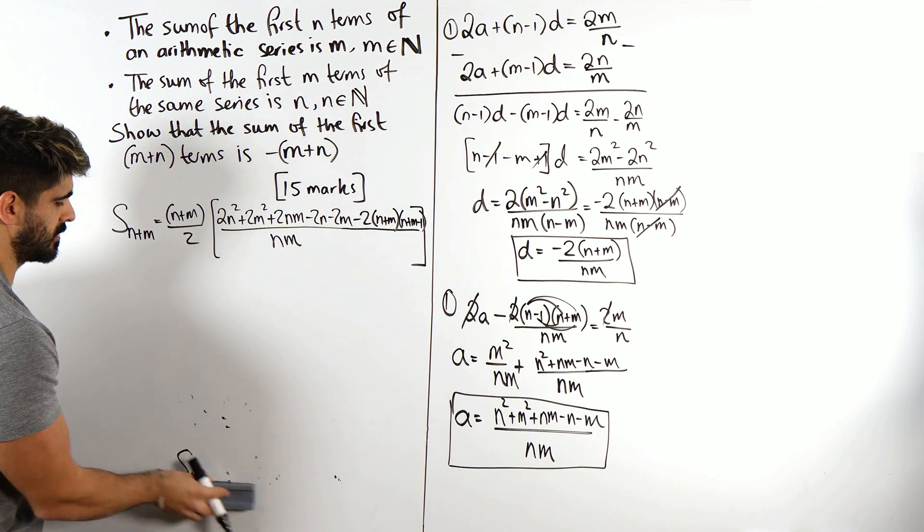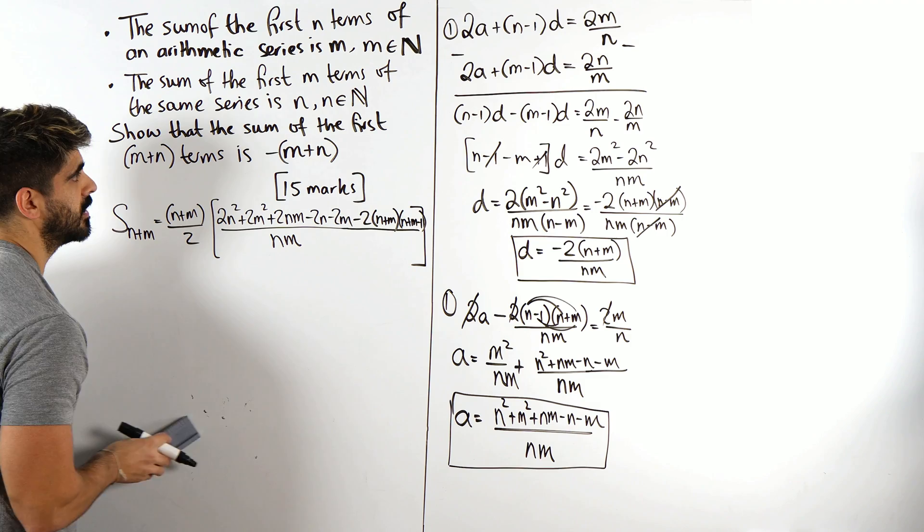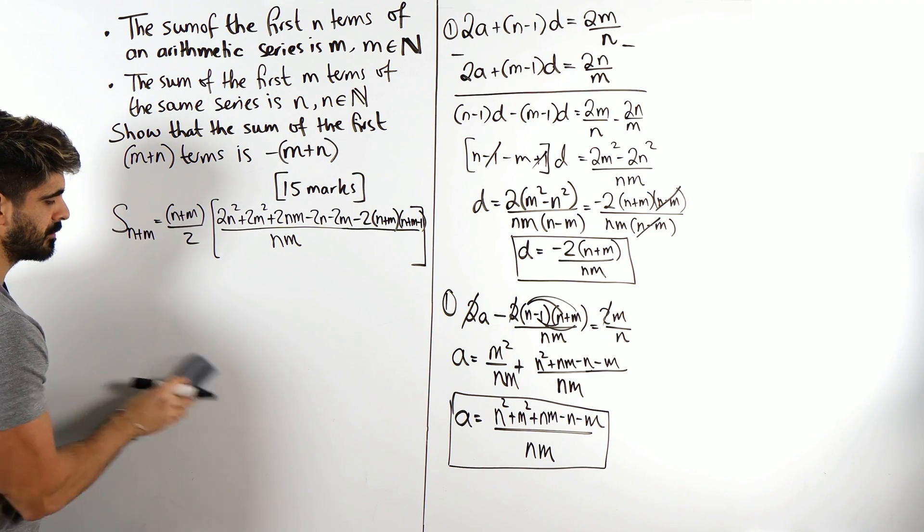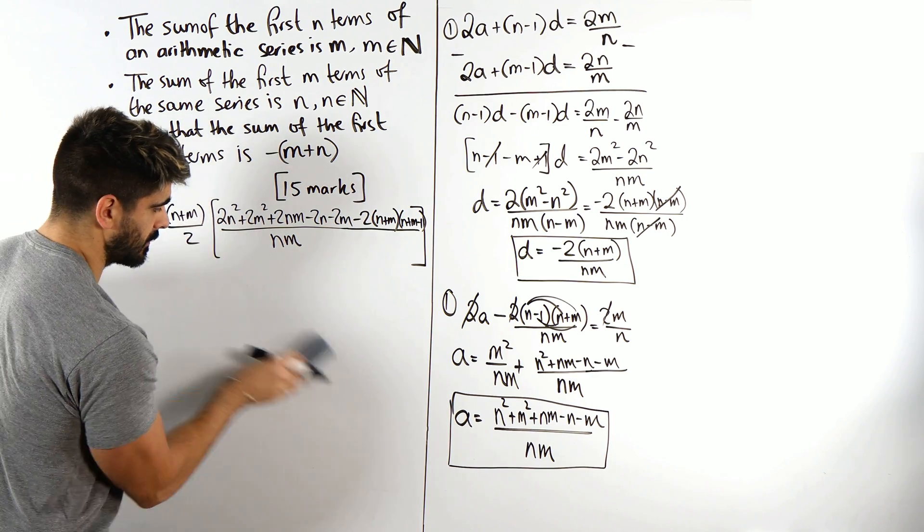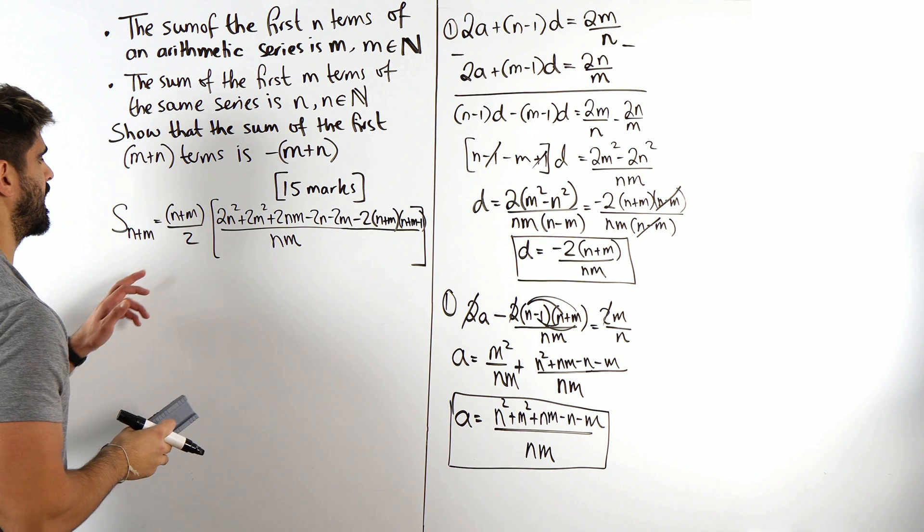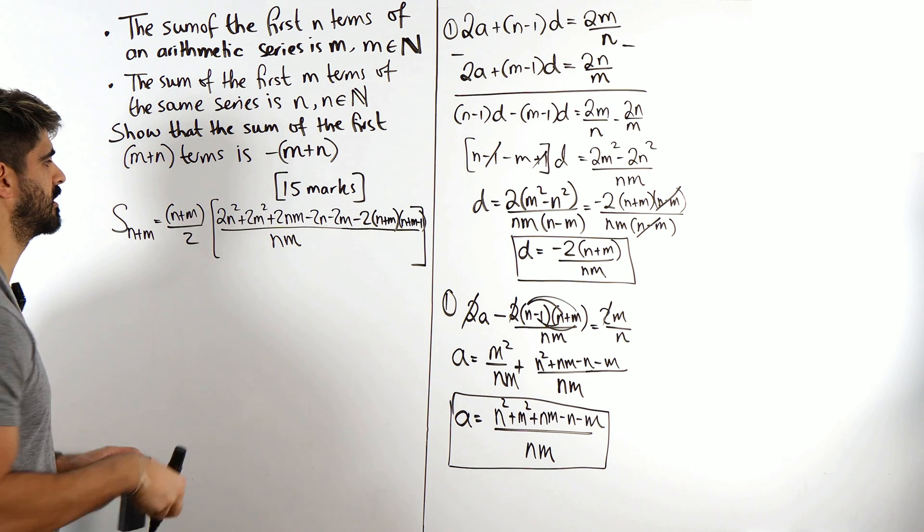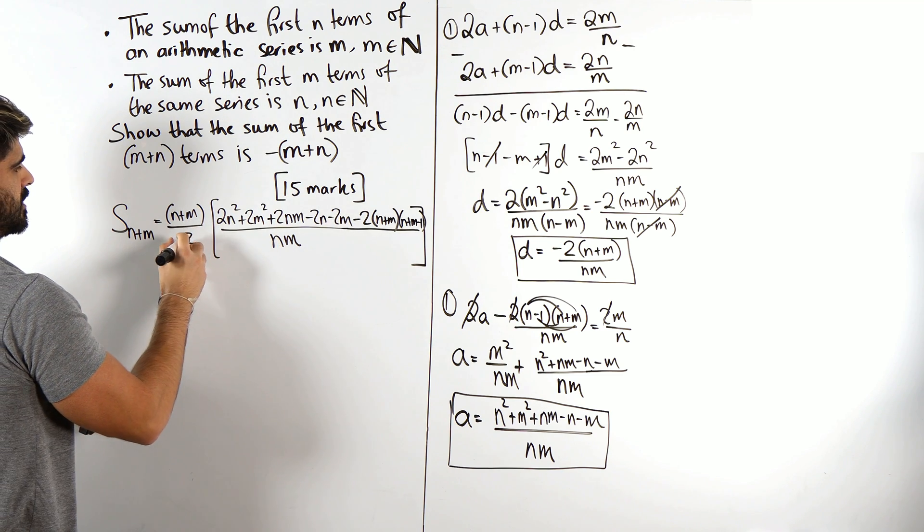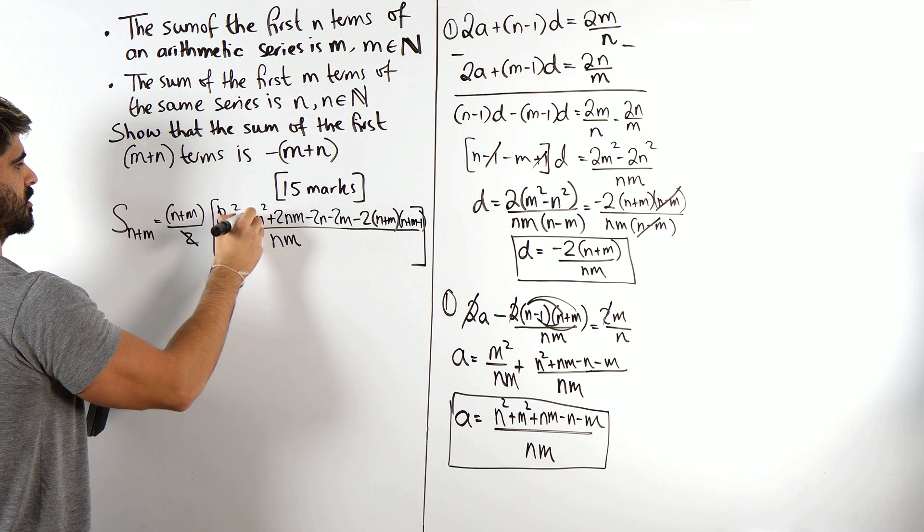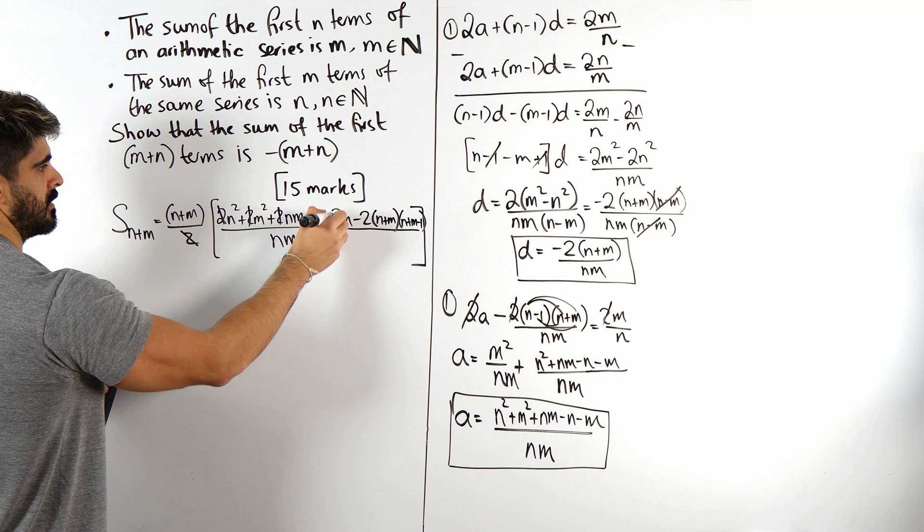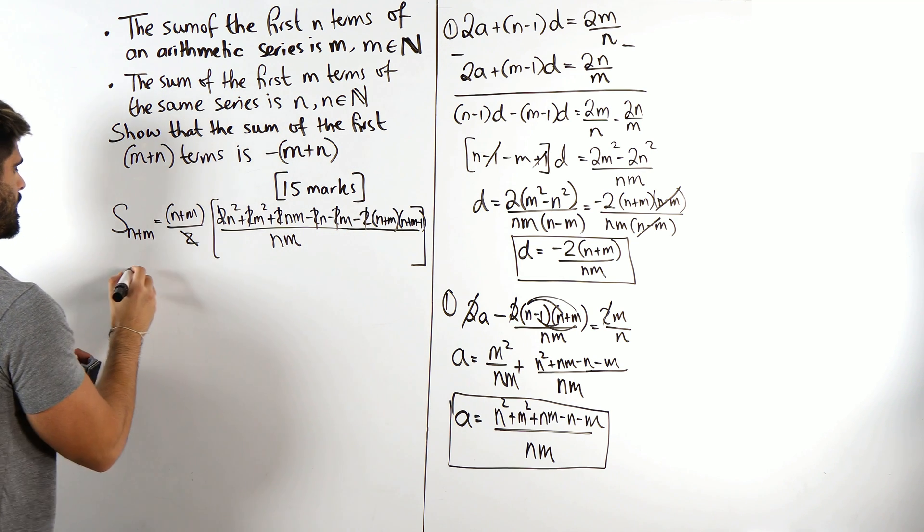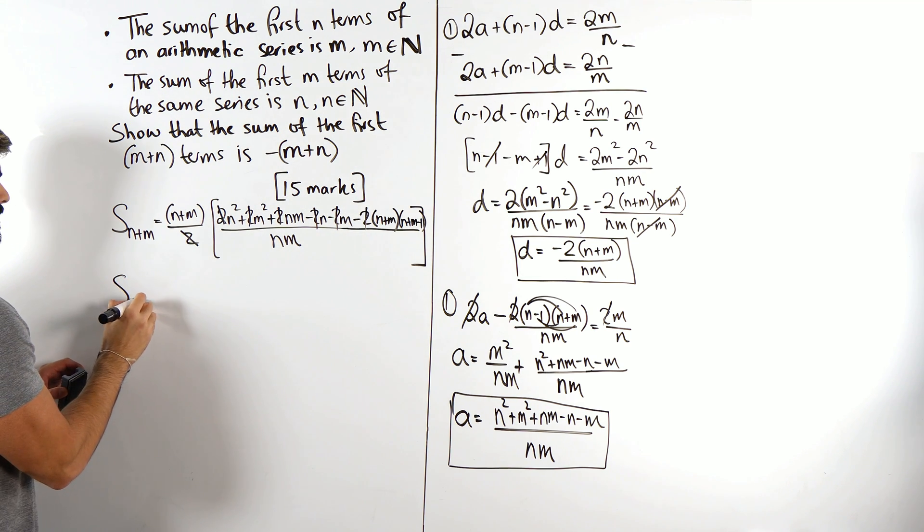Plus m minus 1 times d. m minus 1 times d, I've got to times this by m minus 1. Actually it's going to have the same denominator right? d has a denominator of nm so I can kind of extend this whole line and we can just join it all up. So I have d times, so this is not going to be m though right, it's m plus n minus 1, so it's minus 2 times m plus m times m plus n minus 1.